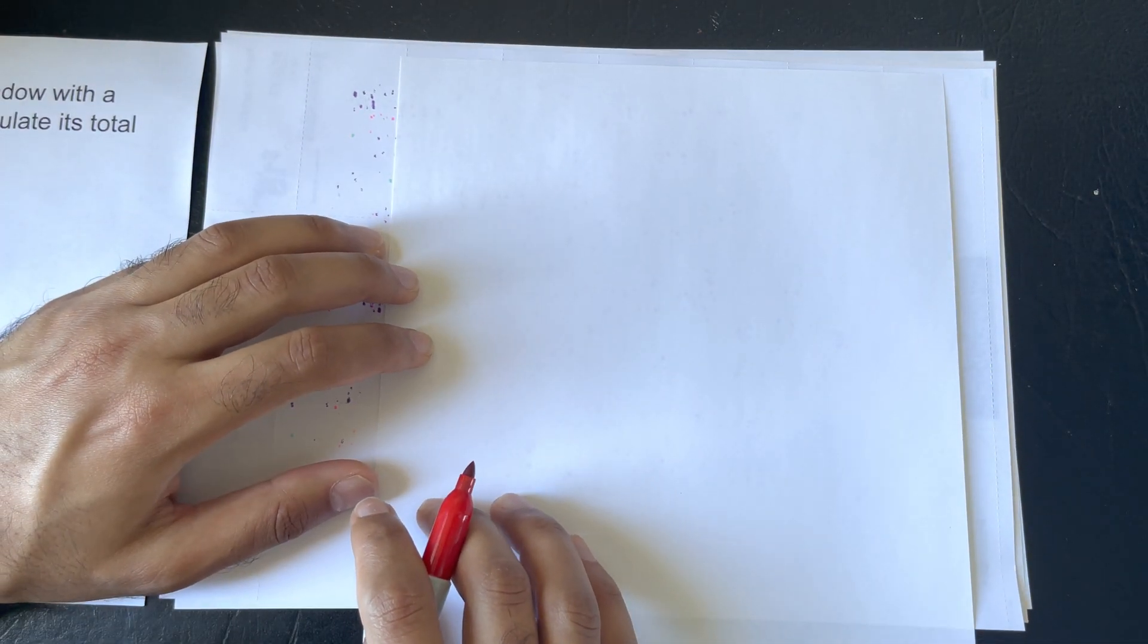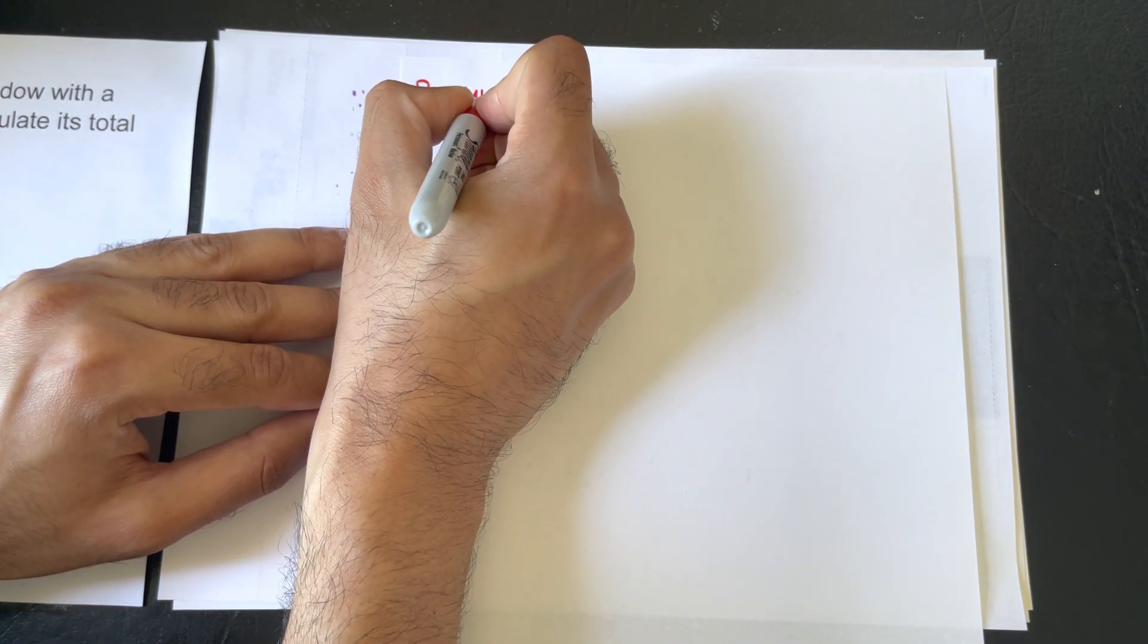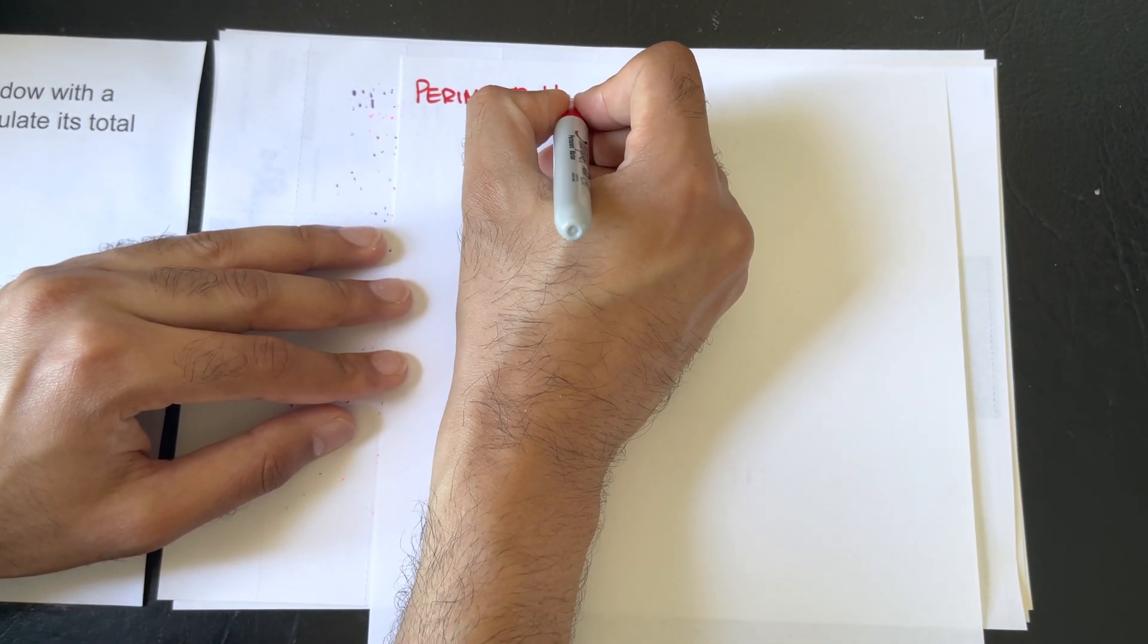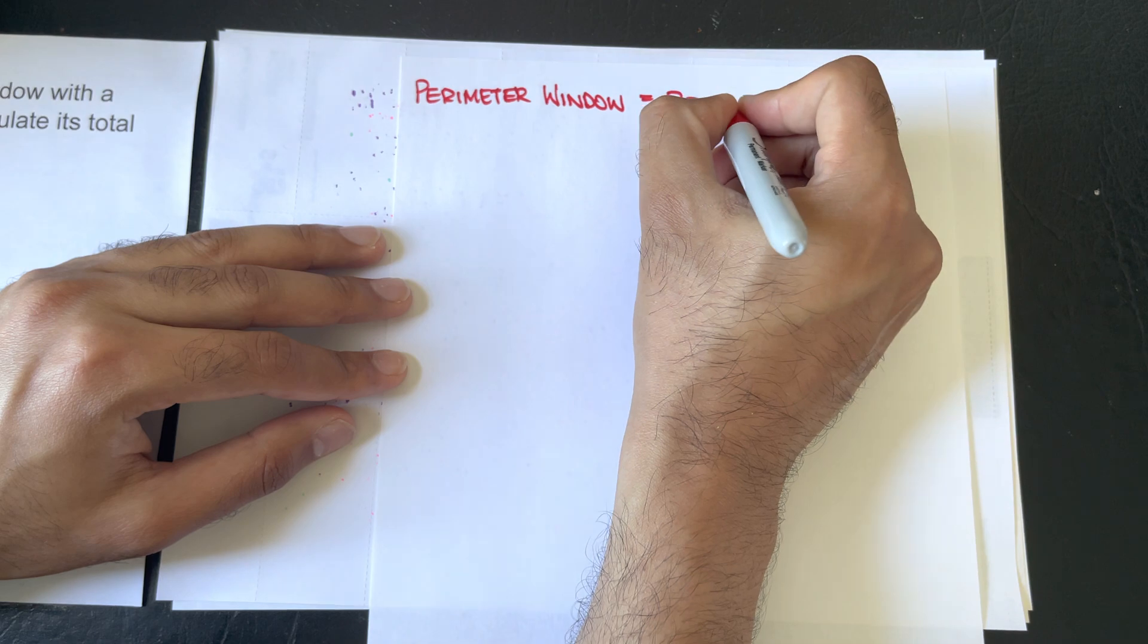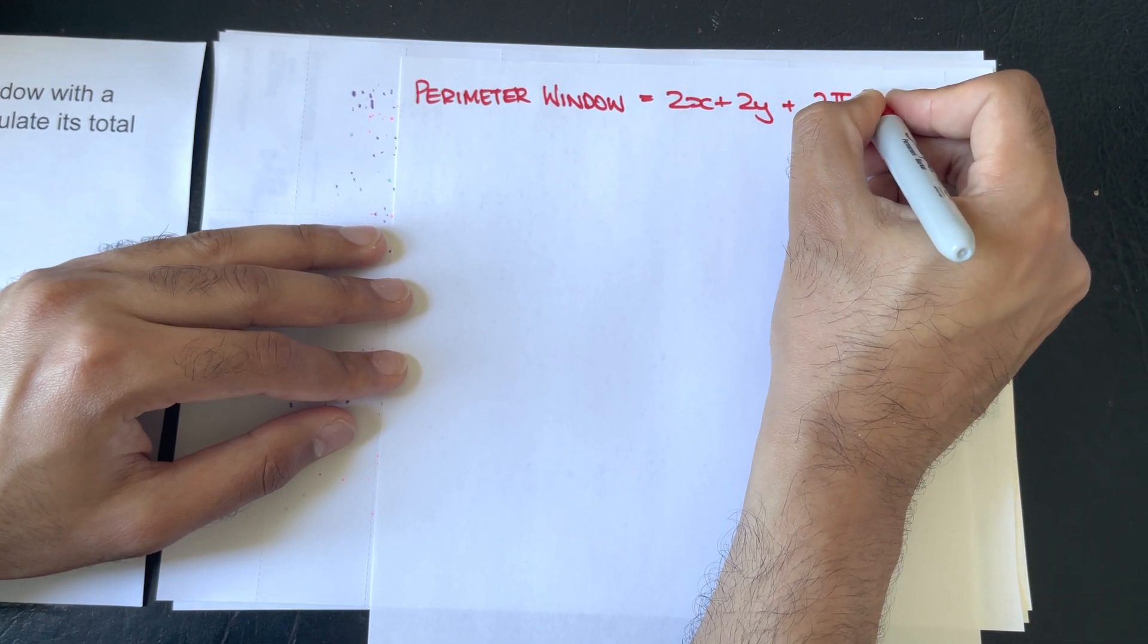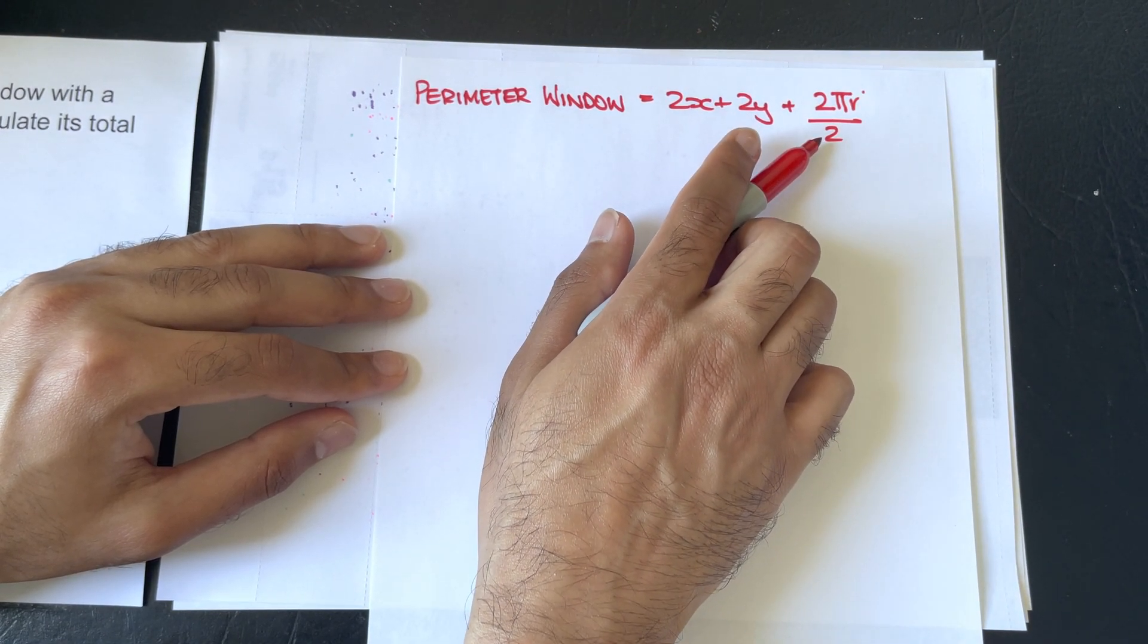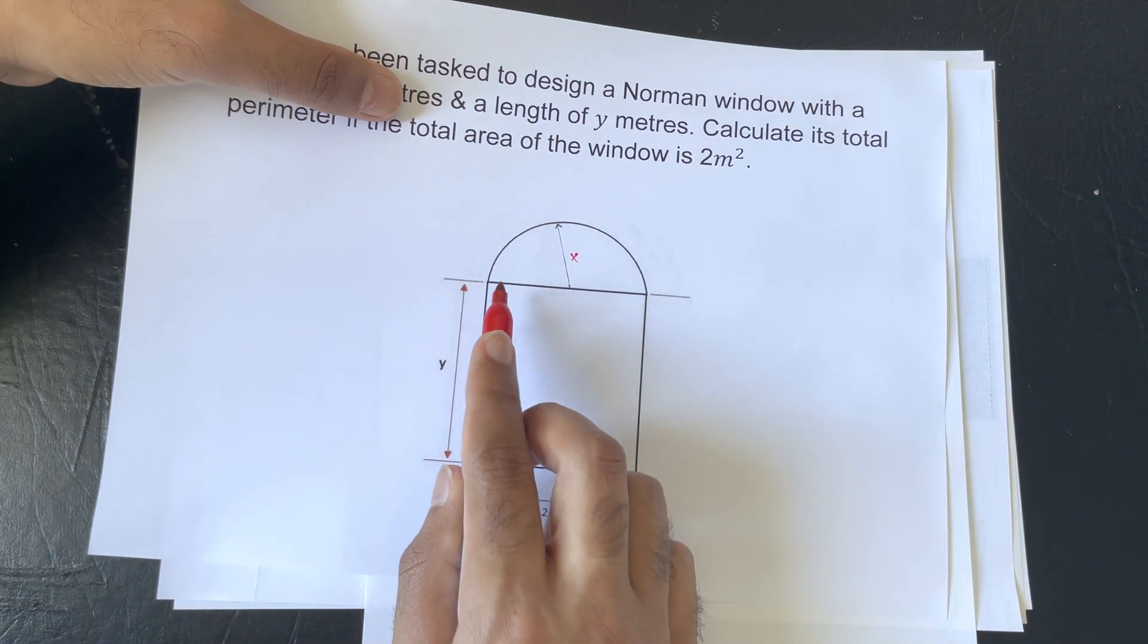So, we'll kick things off with the perimeter of the window. And that is being equal to 2x plus 2y plus 2πr over 2, being divided by 2 because we want the length of a semicircle.